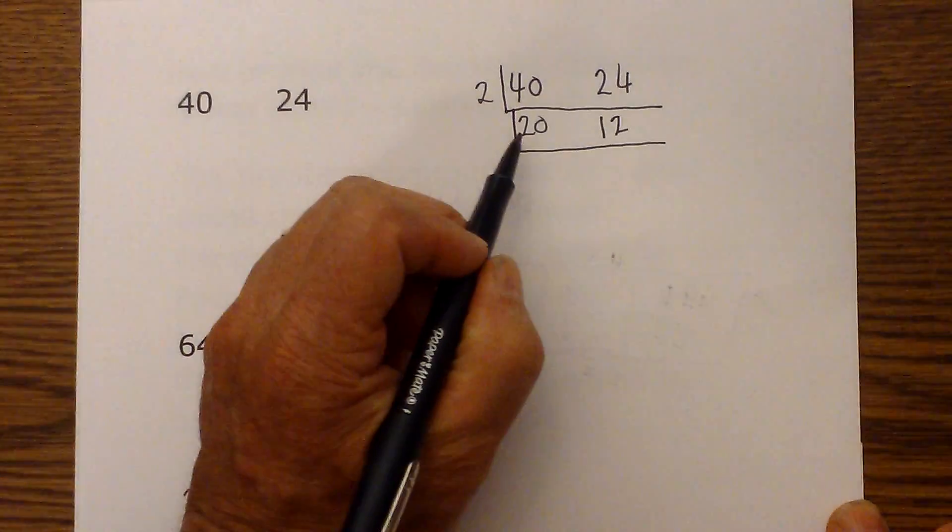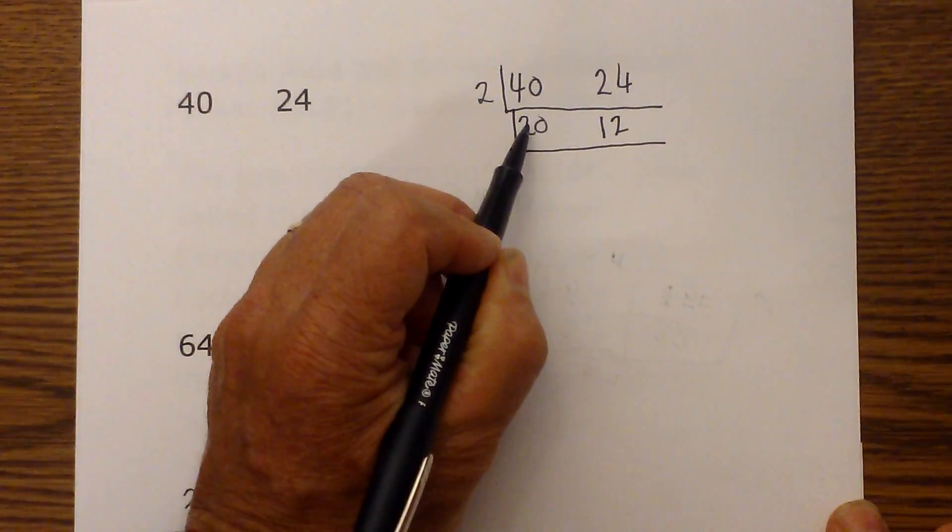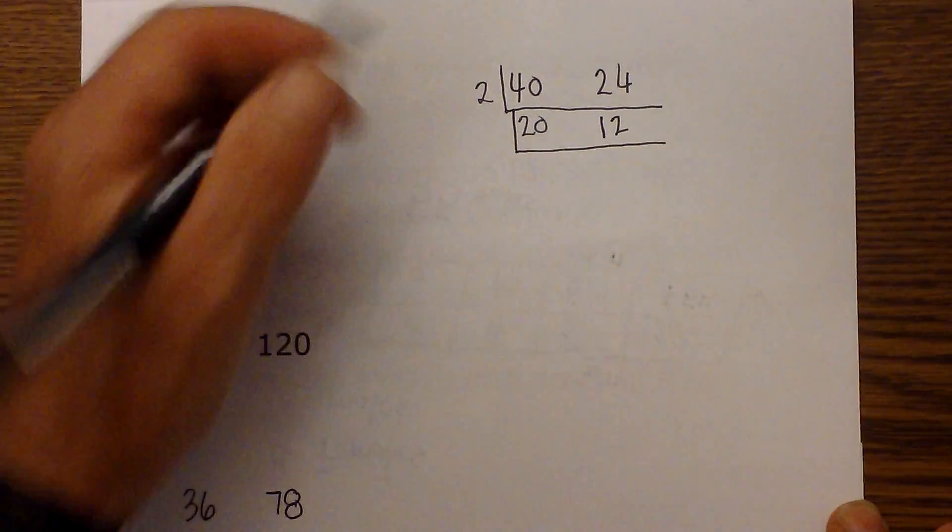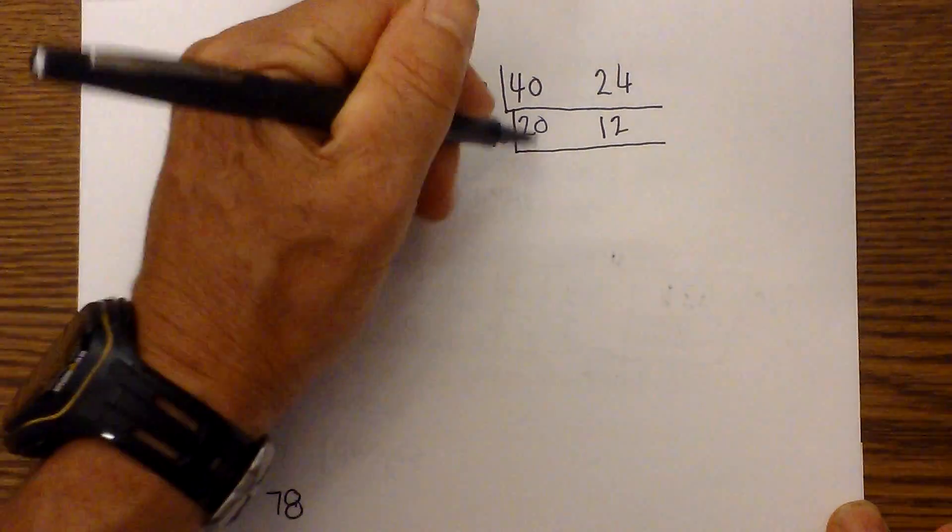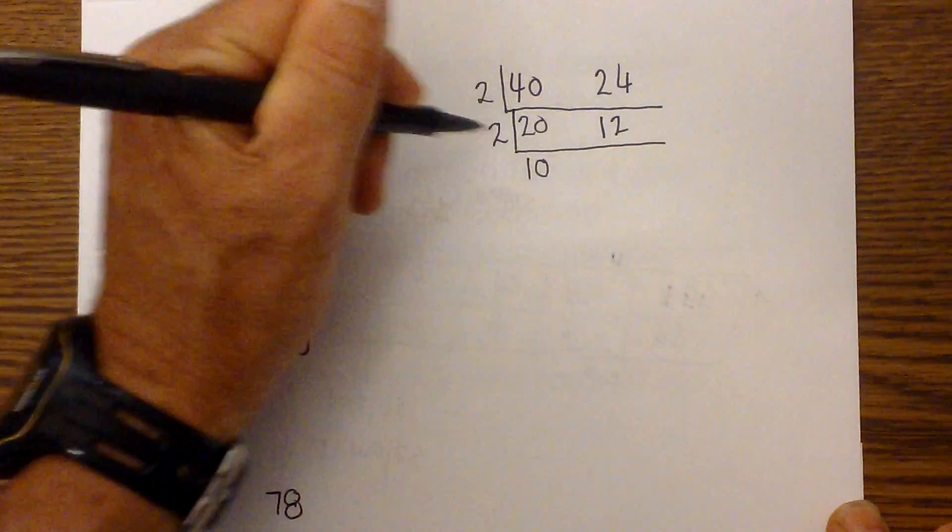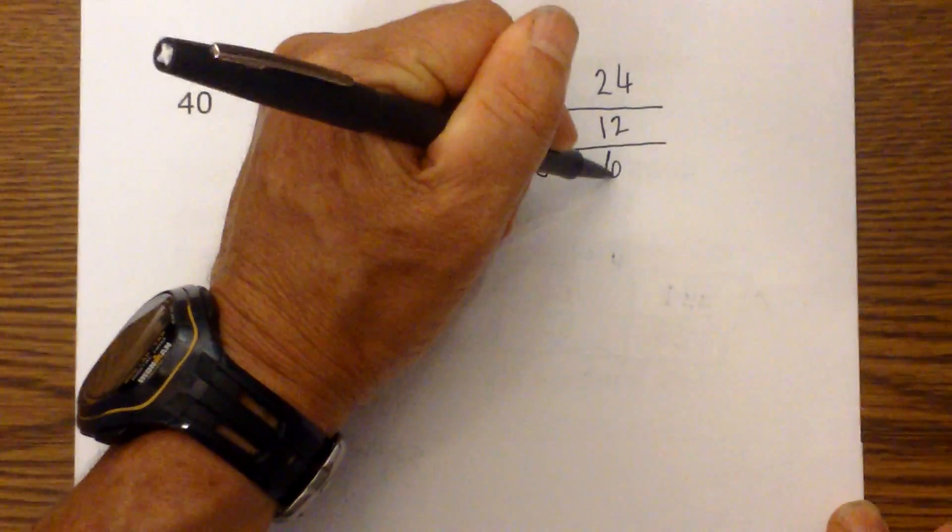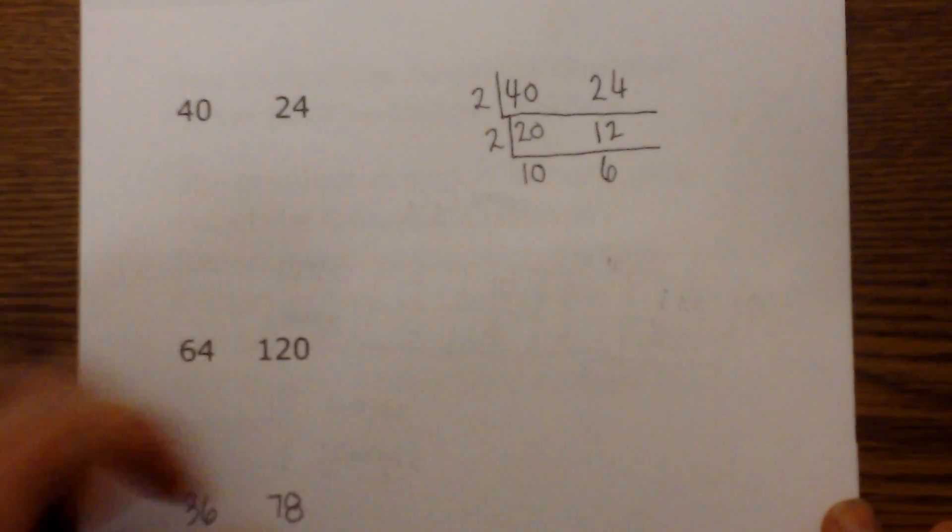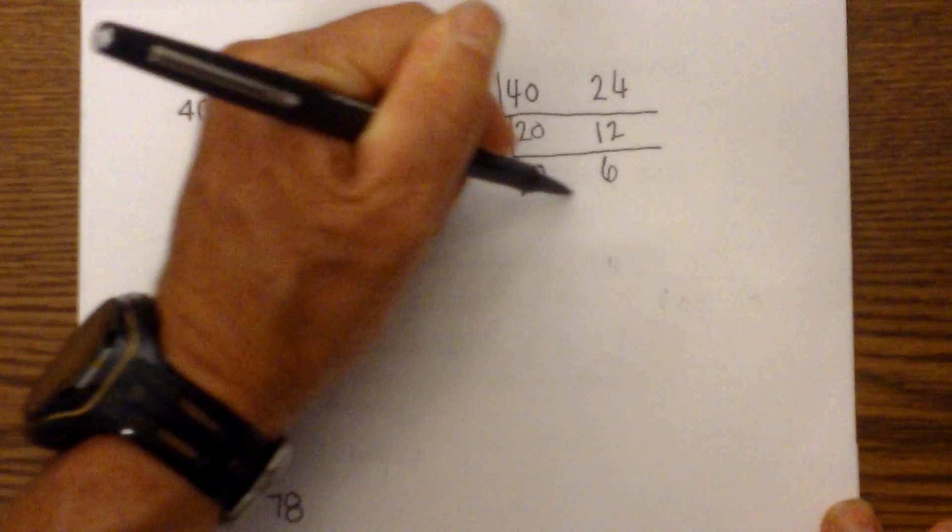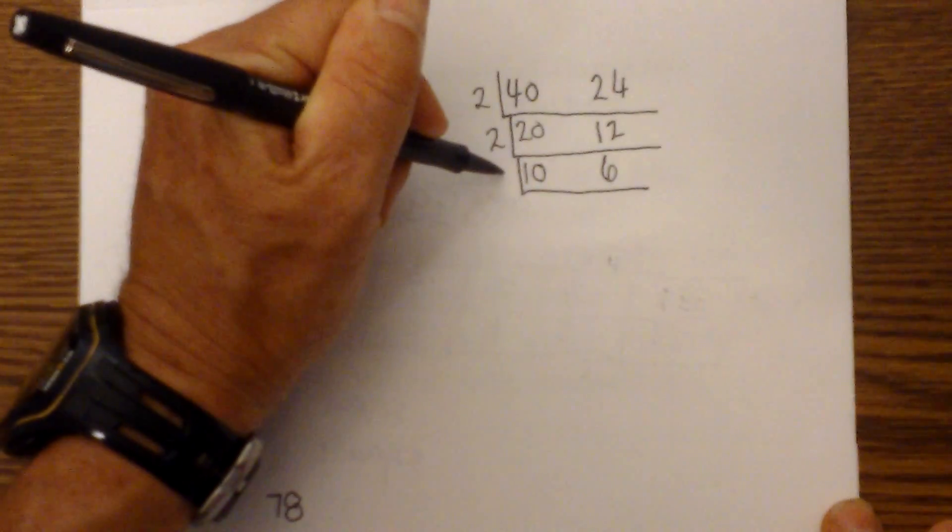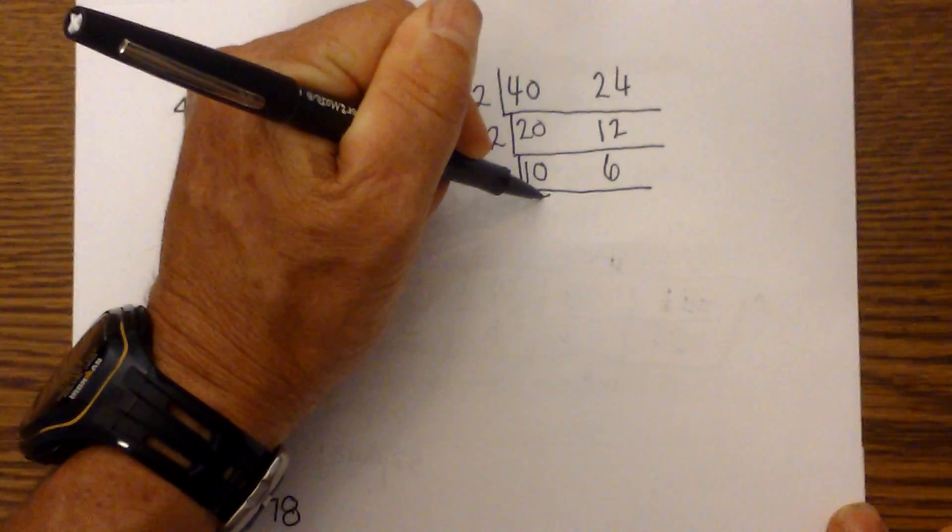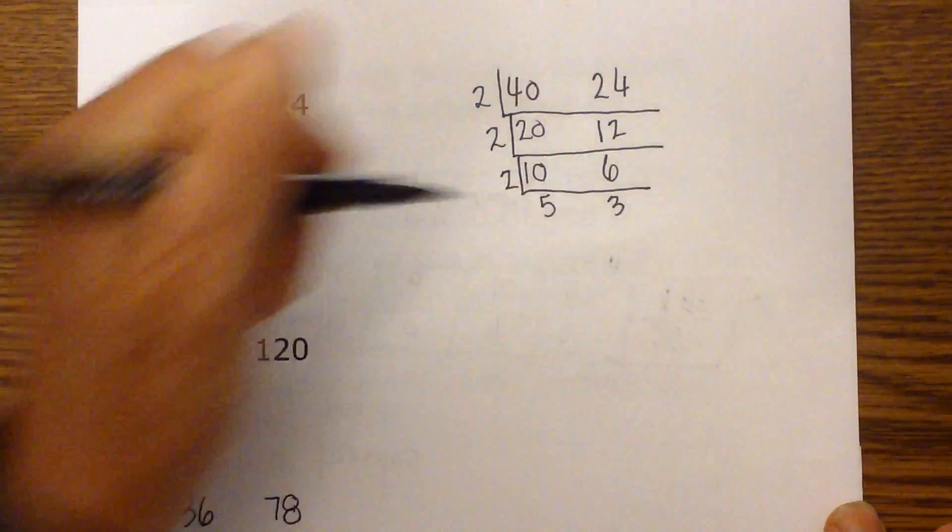And you repeat the process. What number will divide evenly into 20 and 12? Well I know, again, let's go with two. Two goes into 20 10 times and two goes into 12 6 times. Okay, so now I draw a line under this and I ask myself one more time, what number will go evenly into 10 and 6. And again, two will do that. And that will be five and three.